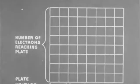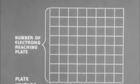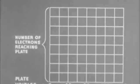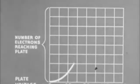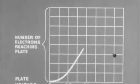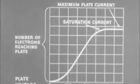The effect of plate voltage upon the number of electrons reaching the plate may be charted. Increasing the plate voltage results in an increasing number of electrons, or plate current. This increase continues to the saturation point.